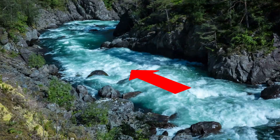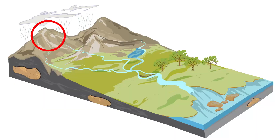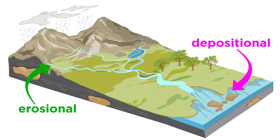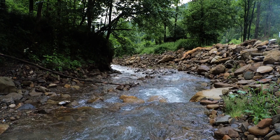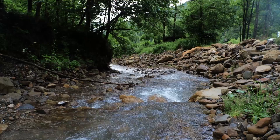Fluvial environments are most common. With these, the water velocity is determined by the slope of the land. Streams begin in areas of highest elevation, growing and slowing as they approach the sea, running through progressively flatter land. Therefore, fluvial environments start out as erosional and become more and more depositional as they near the ocean. Though each environment is different, they all effectively move sediment from high elevation to low elevation.